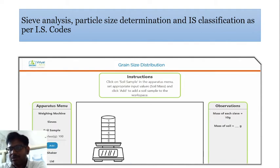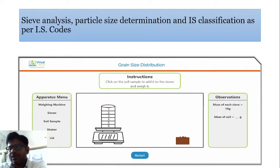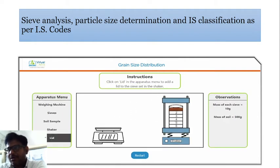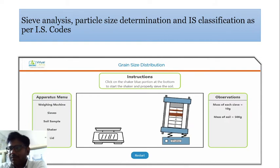We place the soil sample into the sieves and calculate its mass. We put that whole assembly in the sieve shaker. The sieve set is closed with a lid and placed on the sieve shaker.